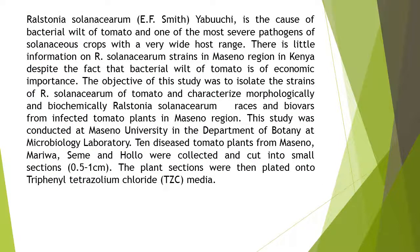Ralstonia solanacearum E.F. Smith, Yabuchi, is the cause of bacterial wilt of tomato and one of the most severe pathogens of solanaceous crops with a very wide host range. There is little information on R. solanacearum strains in Massano region in Kenya, despite the fact that bacterial wilt of tomato is of economic importance. The objective of this study was to isolate the strains of R. solanacearum from tomato and characterize morphologically and biochemically the Ralstonia solanacearum races and biovars from infected tomato plants in Massano region.